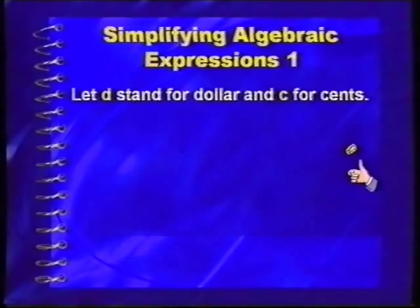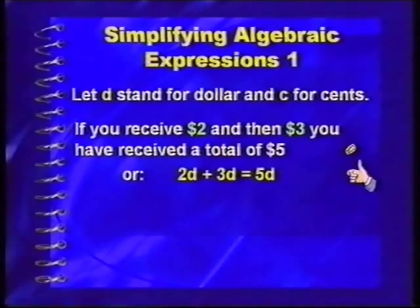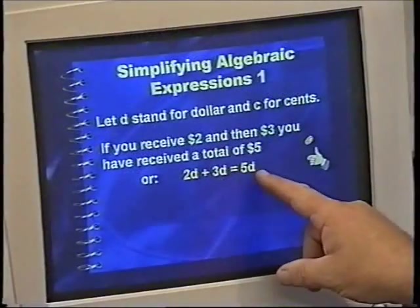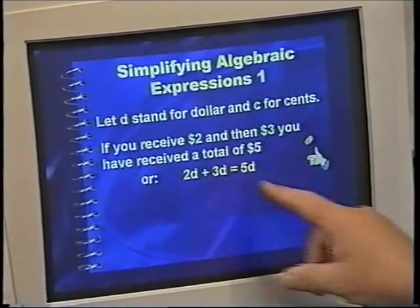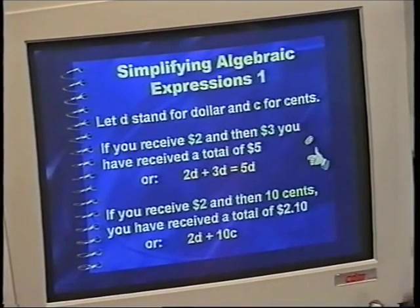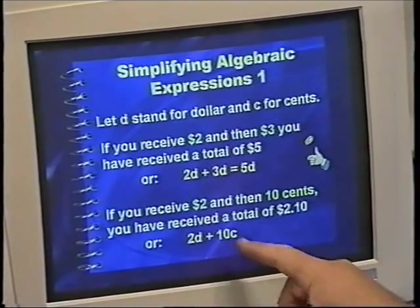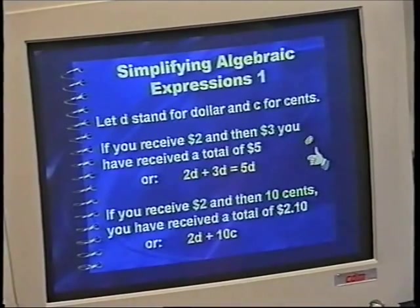Here's a nice example using D for dollars and C for cents. If I receive two dollars and then three dollars, I've received five dollars total: 2D plus 3D equals 5D — we keep the same letter and add the coefficients. But if you receive two dollars and then ten cents, you can't simplify that further. It stays as 2D plus 10C. This leads to the important rule of algebra: only like terms can be added or subtracted.